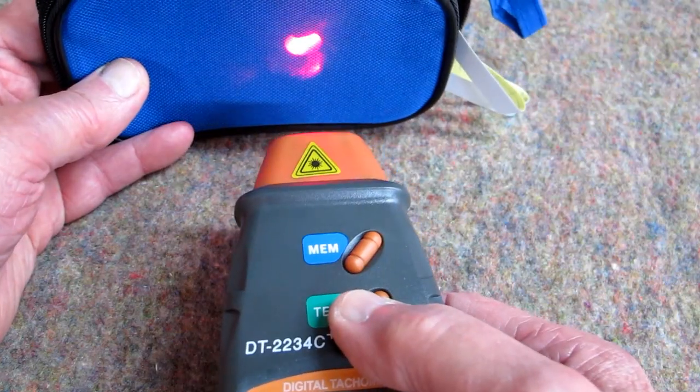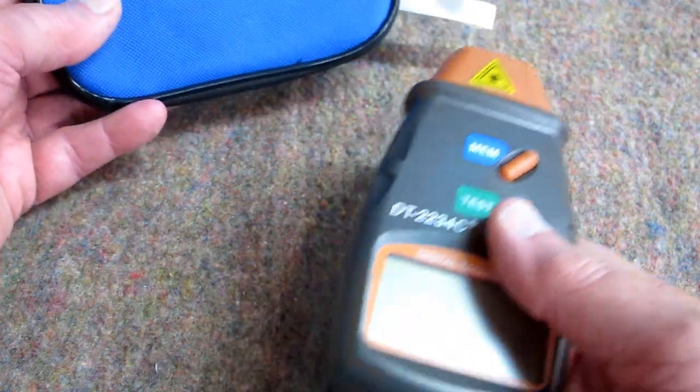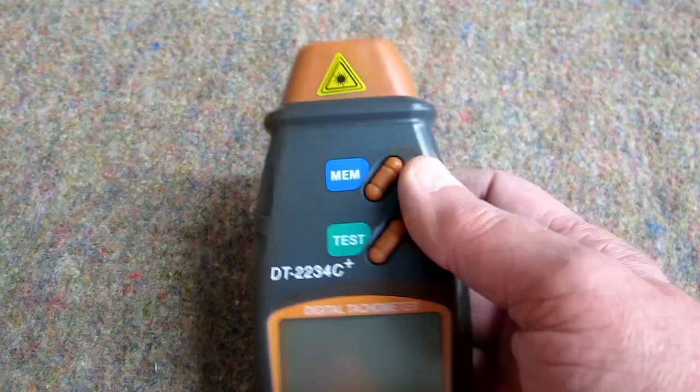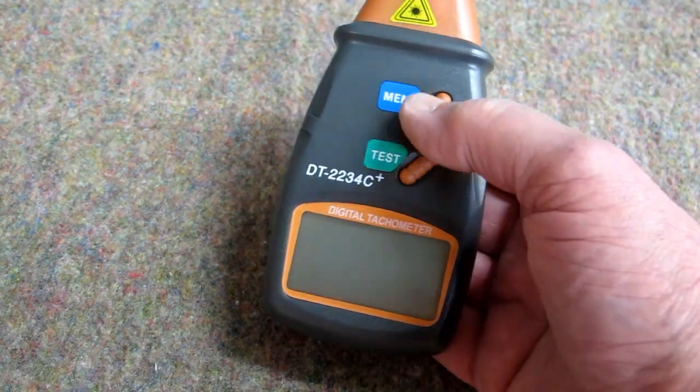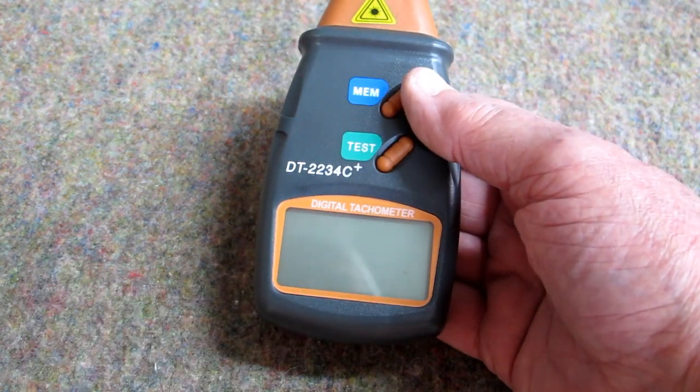When you push the button, the laser comes on and it will bounce off of one of these reflective tapes and you'll get a reading. When you let go of this, you push memory and memory will show you what the last reading was. So, real simple to operate.